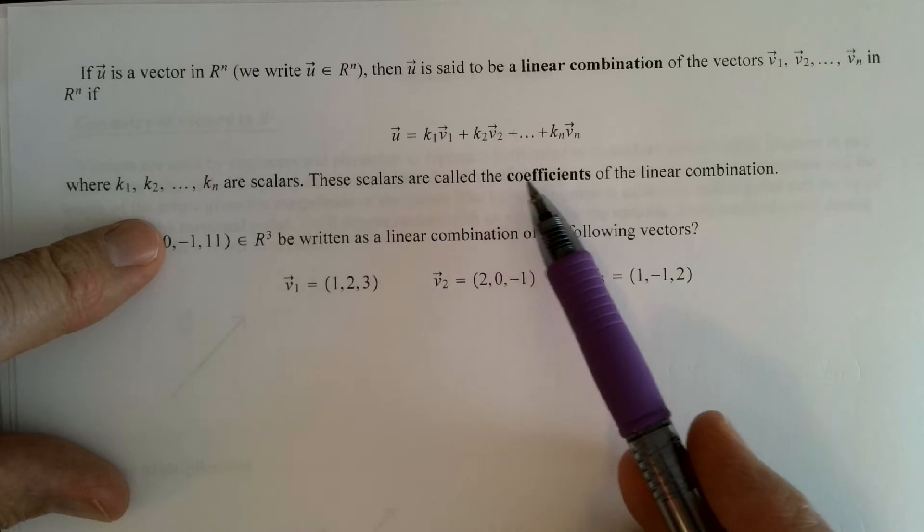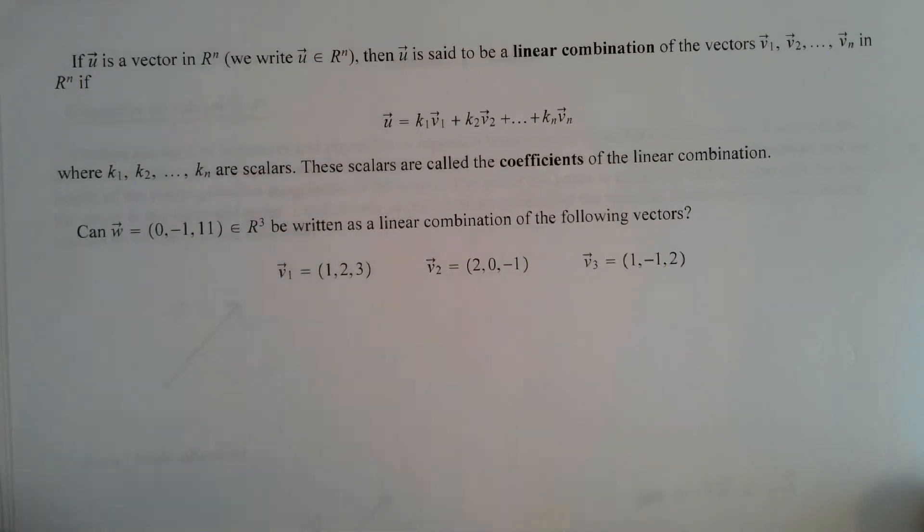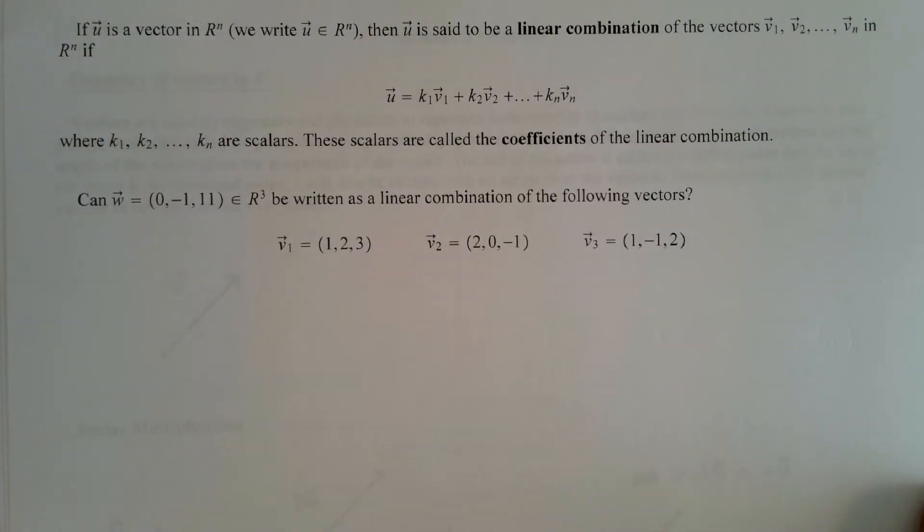The scalars k1 through kn are called the coefficients of the linear combination. So this is real important here in the study of linear algebra to be able to deal with linear combinations.